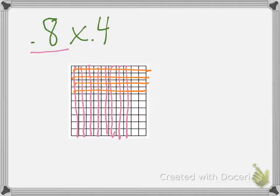So the hundredths squares that they are both in, we want to count those. So we have 1, 2, 3, 4, 5, 6, 7, 8, 9, 10, 13, 14, 15, 16, 17, 18, 19, 20, 21, 22, 23, 24, 25, 26, 27, 28, 29, 30, 31, 32. We have 32 hundredths. So 8 tenths times 4 tenths equals 32 hundredths.